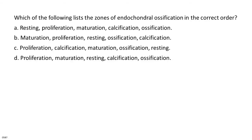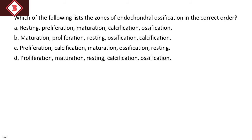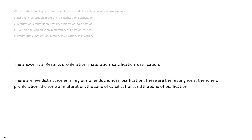Which of the following lists the zones of endochondral ossification in the correct order? A. Resting, proliferation, maturation, calcification, ossification. B. Maturation, proliferation, resting, ossification, calcification. C. Proliferation, calcification, maturation, ossification, resting. D. Proliferation, maturation, resting, calcification, ossification. The answer is A: resting, proliferation, maturation, calcification, ossification.